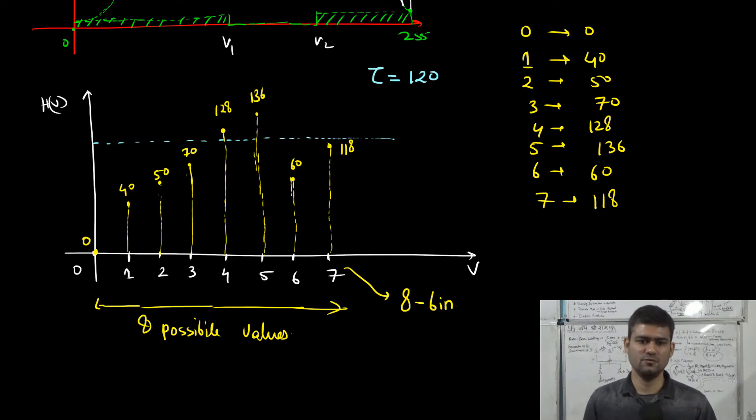Now we will clip the histogram at 120. It means that in the bin corresponding to level 4, we will remove 8 pixels and in the bin corresponding to level 5, we will remove 16 pixels. This gives us total 24 pixels to be redistributed.